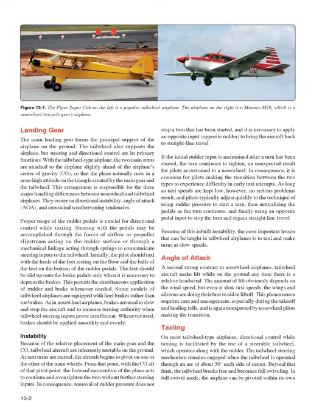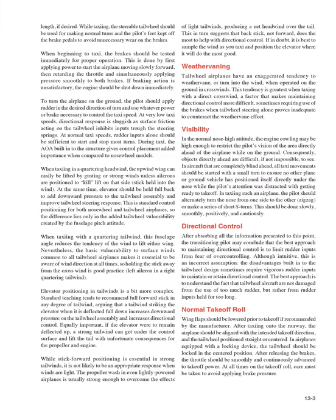Directional control while taxiing is facilitated by a steerable tailwheel, which operates along with the rudder. The tailwheel steering mechanism remains engaged within an arc of about 30 degrees each side of center; beyond that limit, the tailwheel breaks free and becomes full swiveling, allowing the airplane to pivot within its own length. While taxiing, the steerable tailwheel should be used for normal turns, with the pilot's feet kept off the brake pedals to avoid unnecessary brake wear.